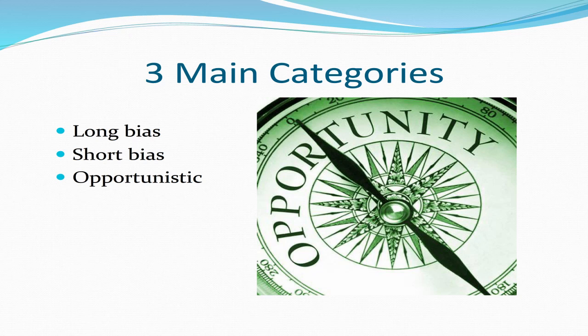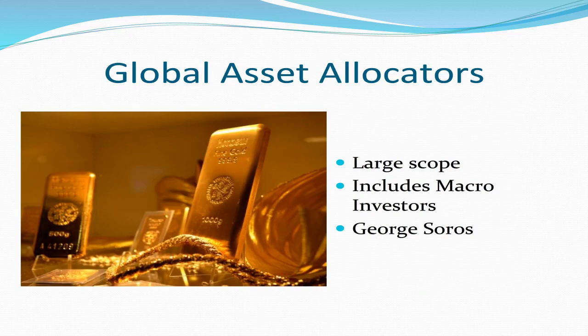The next type of fund we'll look at is global asset allocators. They include a large range of markets, from anything to commodities, energy, to trading stocks or derivatives, in a wide range of geographic locations. They also include macro-investors. One such macro-investor would be George Soros. Their strategies fall into two main categories: discretionary or systematic strategies such as algorithmic trading and black-box trading.